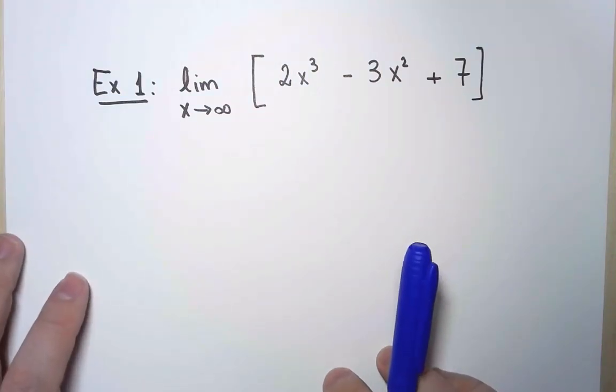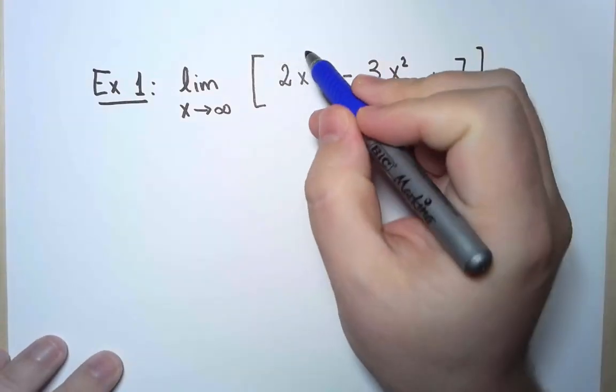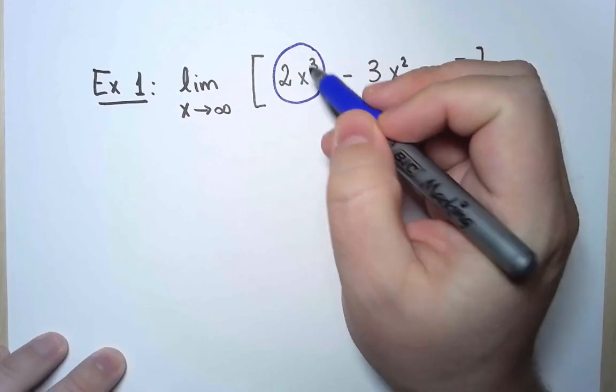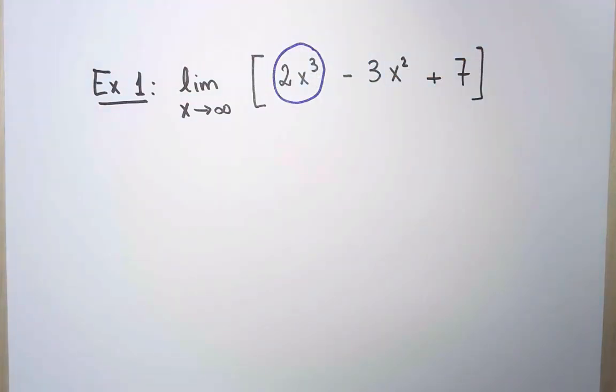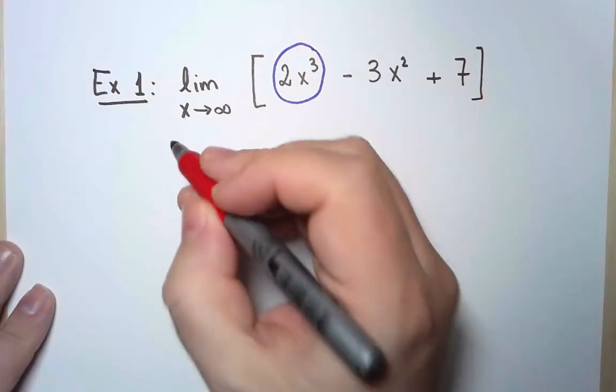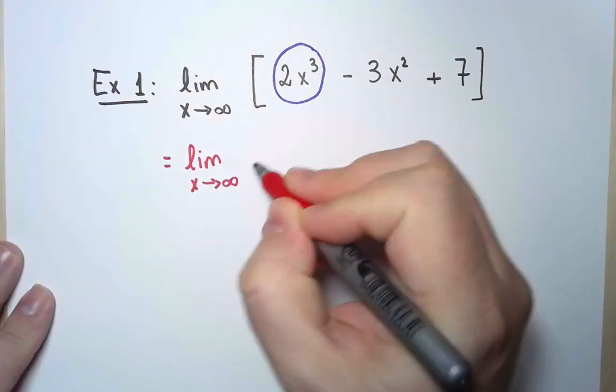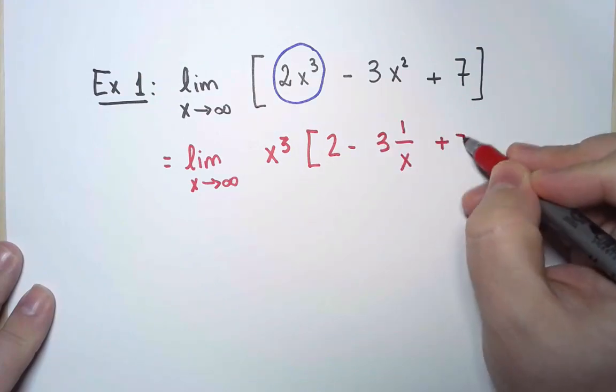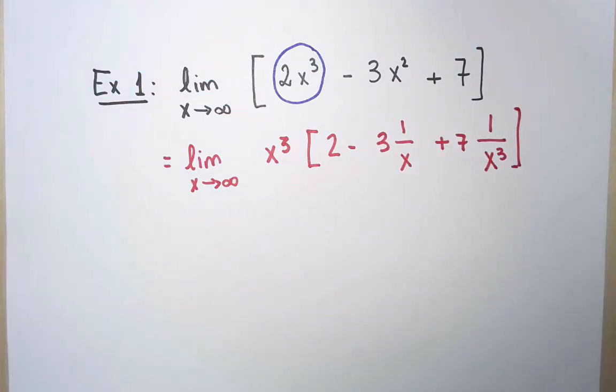The rule is that for a polynomial as x approaches infinity, only the term with the largest exponent matters. But the justification for this is as follows. I can always factor out the biggest power.